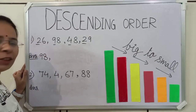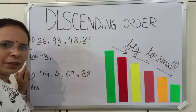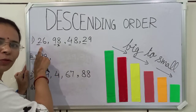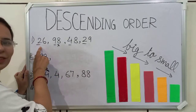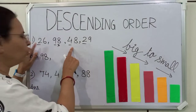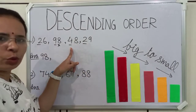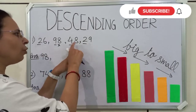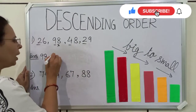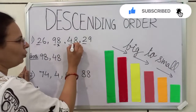We have written 98, so we will cut it. Now, we have to find the biggest number among these three numbers. We will start from the first number. First number is 2. Is 2 bigger than 4? No. So, we will skip 2. We will take 4. Is 4 bigger than 2? Yes. So, it means 48 is the biggest number among these three numbers. So, we will write 48. We have written 48, so we will cut it.